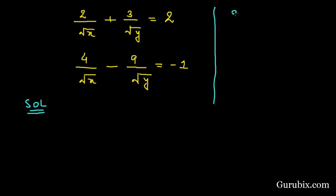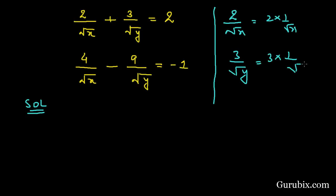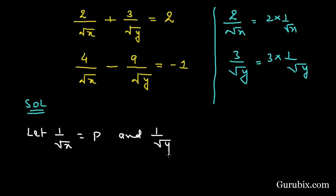We can write 2 over √x as 2 times (1/√x), and 3 over √y as 3 times (1/√y). We shall let 1/√x equal to P and 1/√y equal to Q. Then the first equation becomes 2P + 3Q = 2. This is our equation number 1.